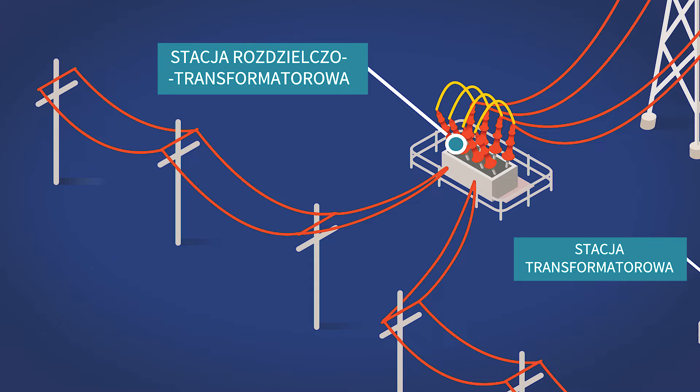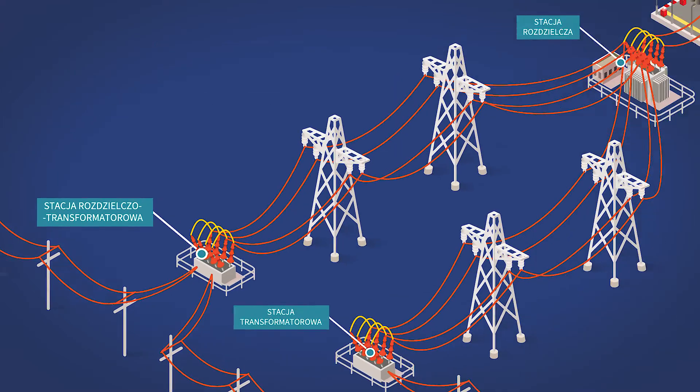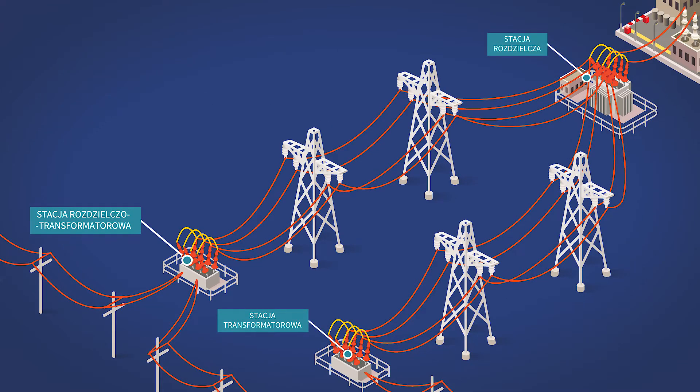Na stacji transformatorowej następuje zmiana napięcia, np. z 400 kV na 110 kV. Na stacji rozdzielczej odbywa się rozdział torów prądowych prowadzących do różnych lokalizacji.